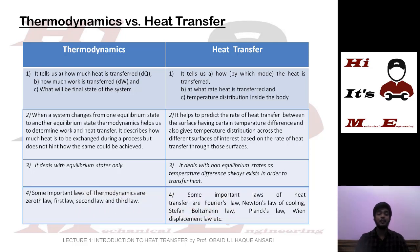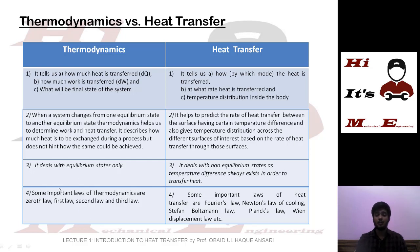Some important laws of thermodynamics are the zeroth law, first law, and second law. Some important laws of heat transfer are Fourier's law, Newton's law of cooling, Stefan–Boltzmann's law, Planck's law, and Wien's displacement law, plus one or two more which we will discuss in this lecture series. Heat always transfers from a body at high temperature to a body at lower temperature — this is essentially the Clausius statement of the second law of thermodynamics, which states that heat cannot be transferred from a lower-temperature reservoir to a higher-temperature reservoir without any work input.